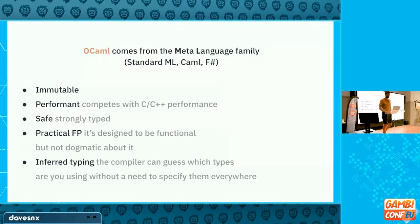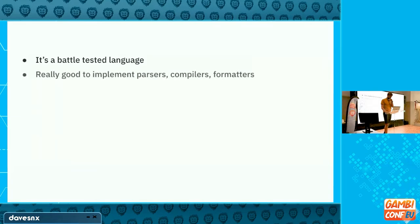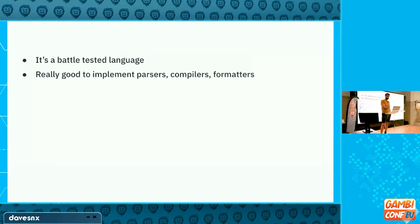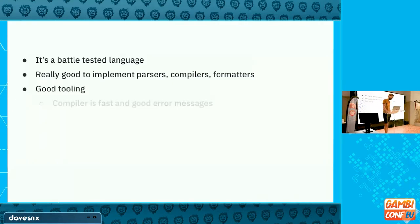For those with TypeScript experience: I would say TypeScript is like half as smart as the OCaml compiler. TypeScript sometimes infers properly but fails miserably most of the time — you won't have that experience with OCaml. Another thing about OCaml: it's been around for about 20 years and is very well suited for writing parsers, compilers, or formatters — anything that touches an AST. I think OCaml is the best language for that. Flow is written in OCaml, Rust started as an OCaml project, and Hack is in OCaml as well. The compiler is fast with good error messages, and there's a decent package manager.